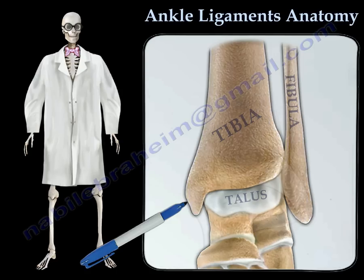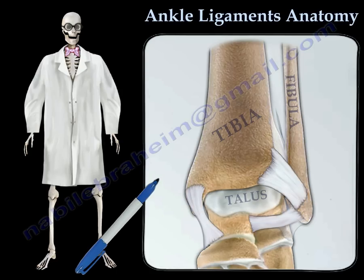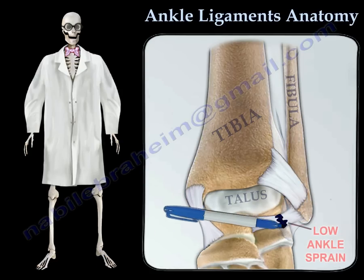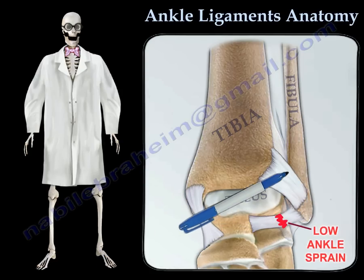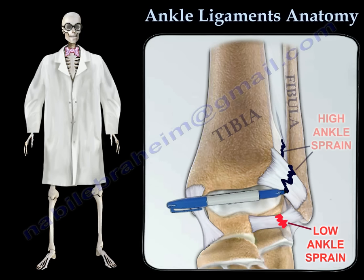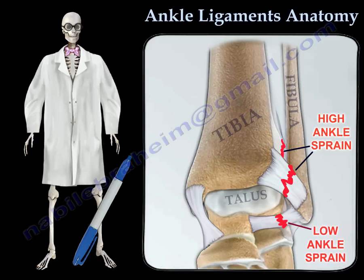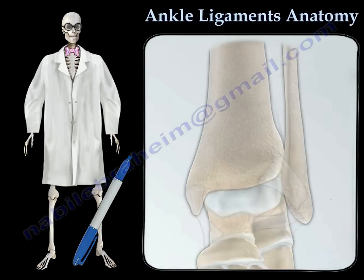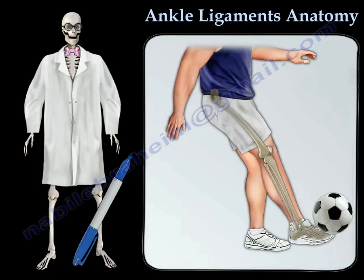There are ligaments in the ankle that provide connection between these bones. Injury to any one of these ligaments may occur when the foot twists, rolls, or turns beyond its normal motions. An ankle sprain is a common injury that occurs in sports such as basketball and soccer.